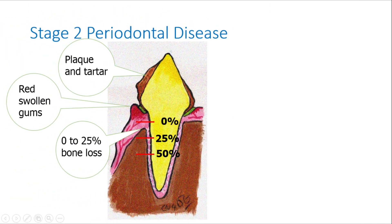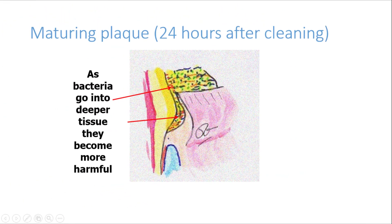In stage 2 periodontal disease, calcium in the saliva has made the plaque into tartar or calculus and it is cemented to the tooth. The gums are swollen and painful and there is between 0 and 25% bone loss. This is not reversible. There is still bone support and the tooth can be saved if the teeth are cleaned by your vet now. The pockets are getting deeper and the bottom of that moat is being destroyed by harmful bacteria. Remember that the deeper the pocket, the more harmful the bacteria.